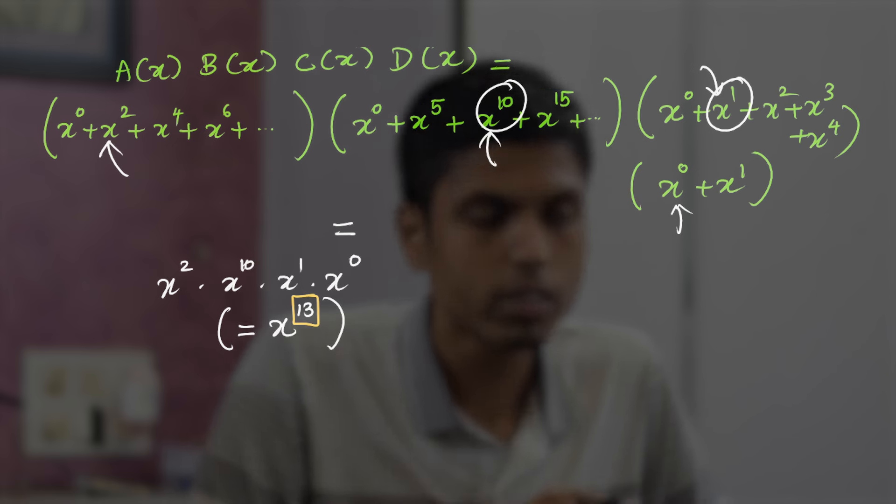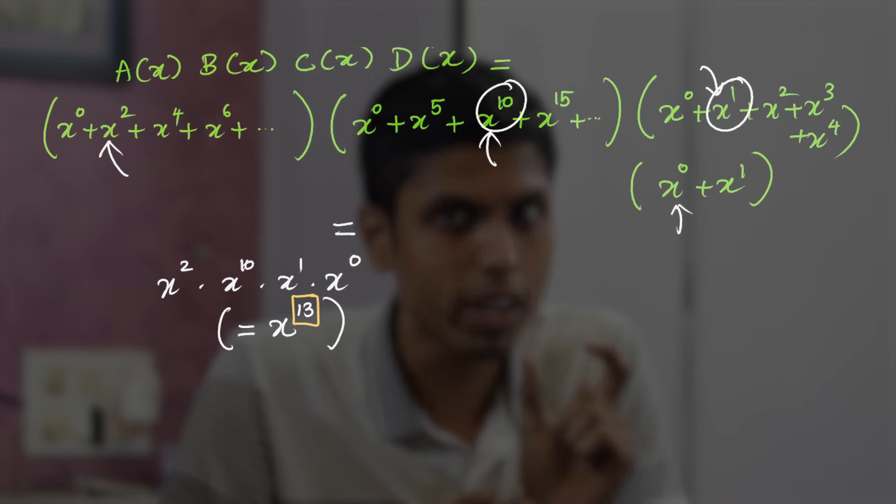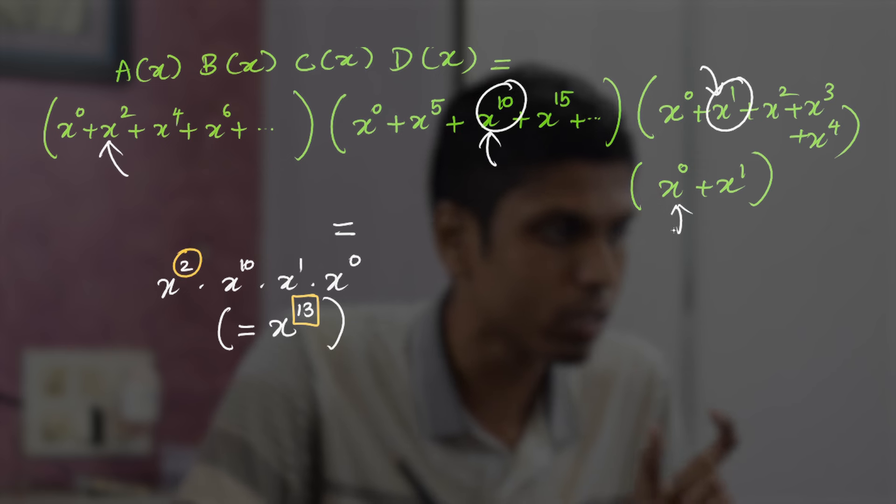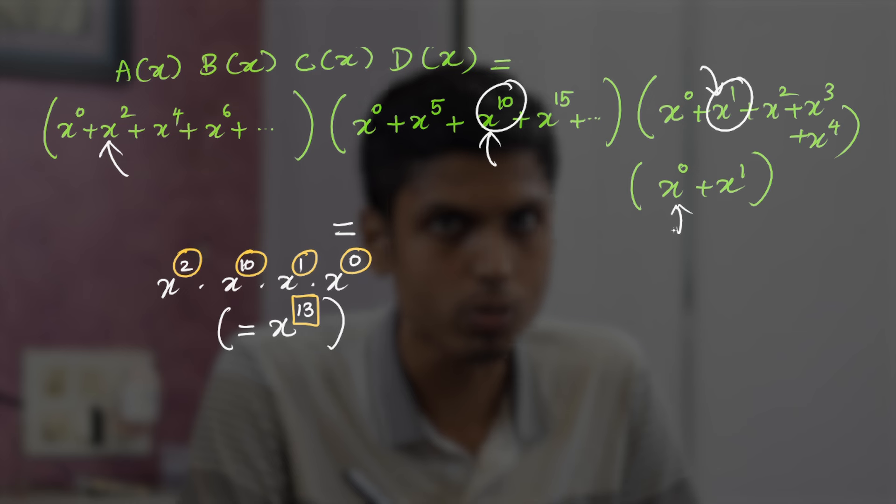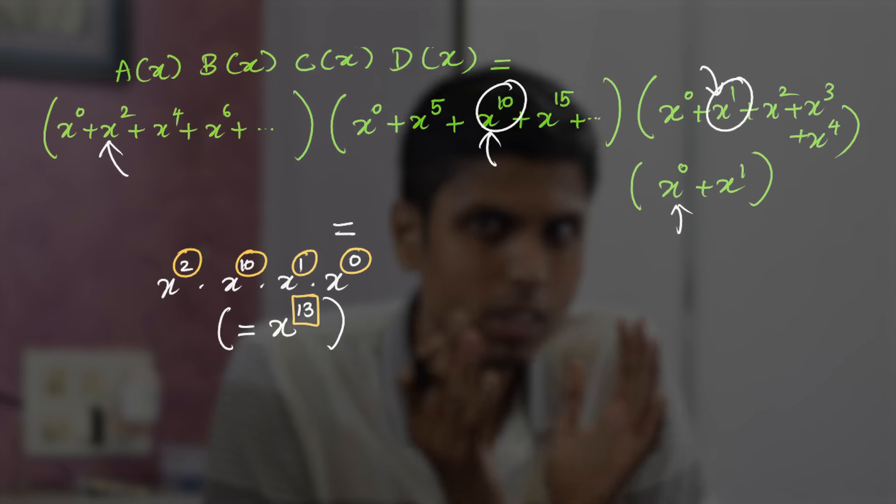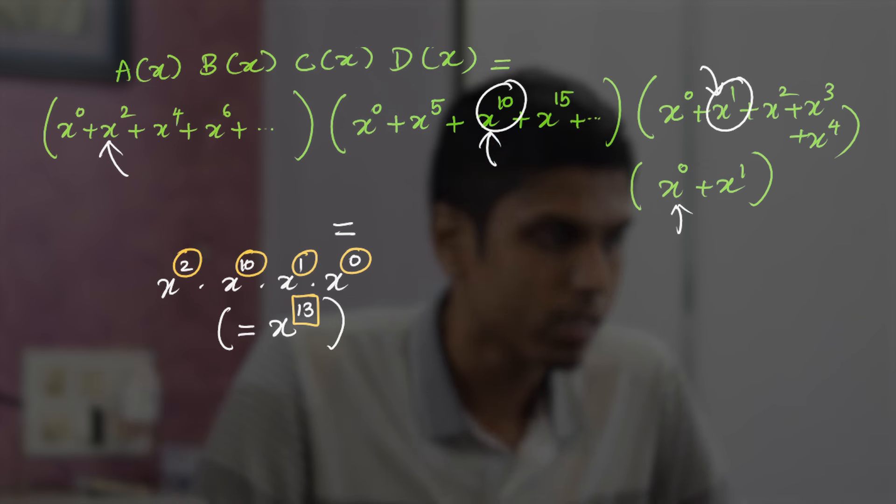So we are interested in x^n because, see, the fruit apple is 2 and banana is 10, one orange and zero pear add up to 13 fruits in total. So if n is 13, then only x^13 is of interest. Other terms are not significant, so we can neglect.